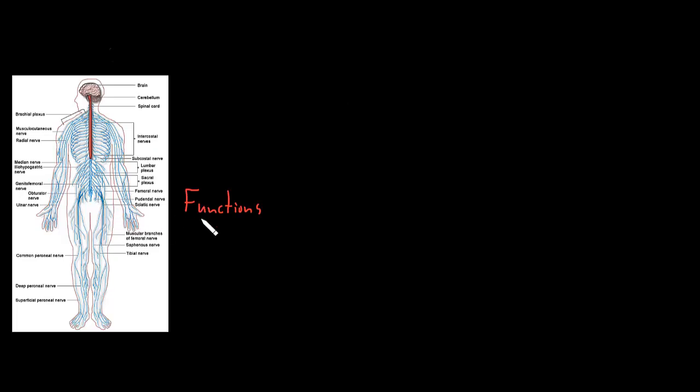The nervous system performs many functions that allow a person to experience their life and create their behavior, as well as many necessary functions of the body for which a person is usually unaware. These functions can be categorized in different ways.